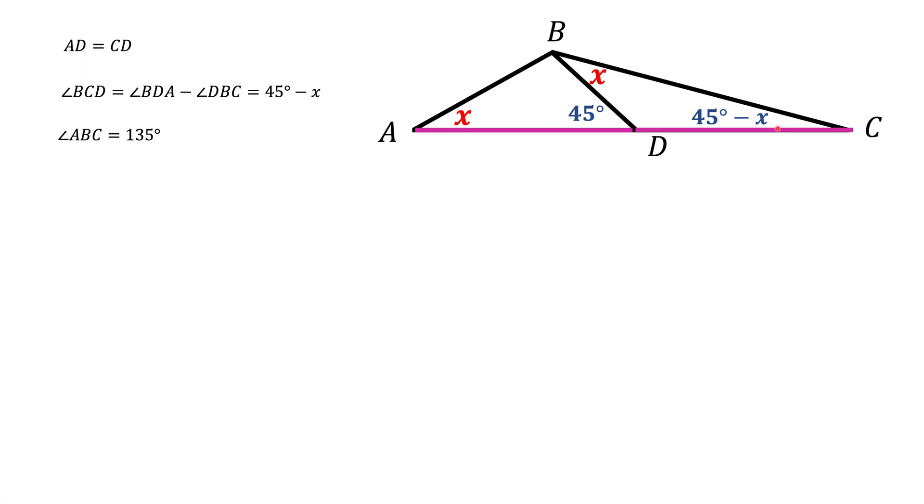The next thing we need is law of sines. Law of sines says that the ratio of a side to the sine of the opposite angle should be the same for all the sides.